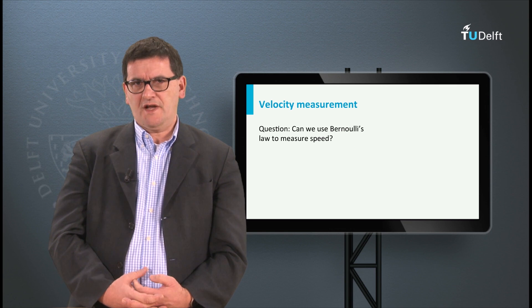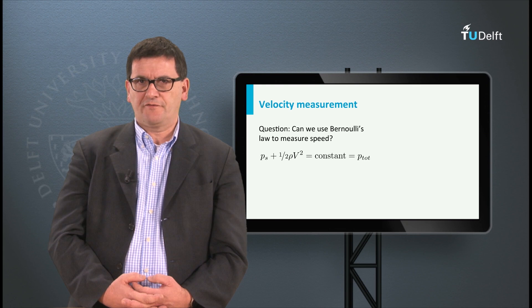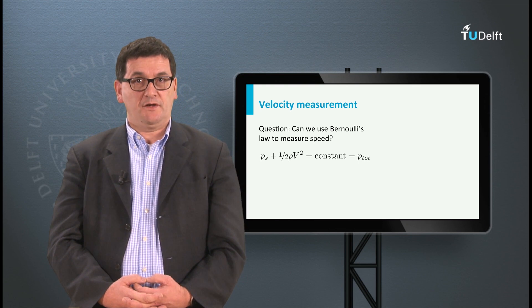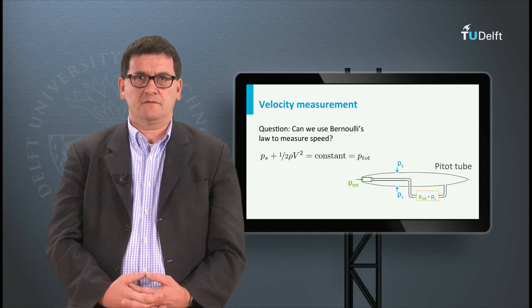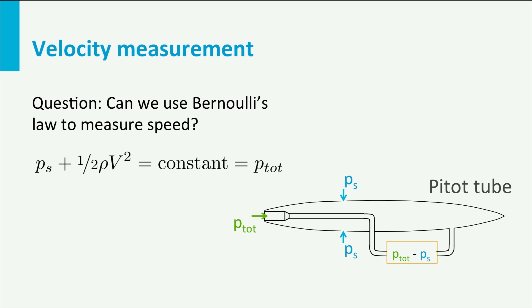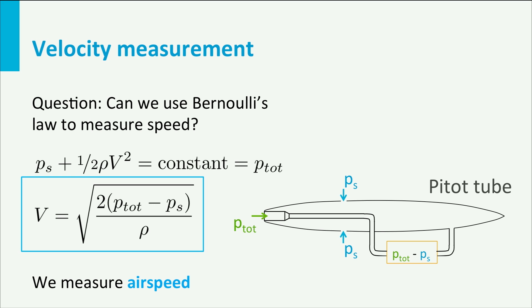Can we use Bernoulli's law to measure the airspeed? If we look at the formula, we see that the total pressure is the pressure for zero airspeed. In a pitot tube we can make several small holes. One hole is in front of the tube, head-on in the airflow — the air enters the tube and comes to a standstill, so here we measure the total pressure. Further, we can make several holes at the side of the tube that measure the local static pressure. The difference between the total and static pressure can be used to calculate the velocity as demonstrated by the equation.